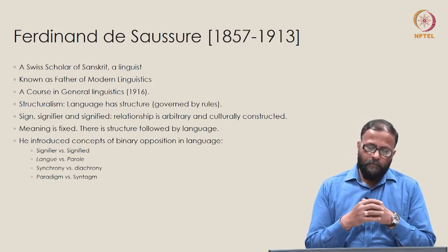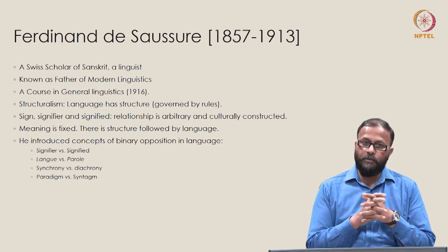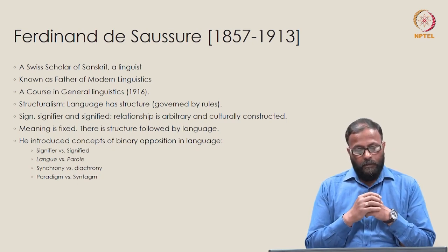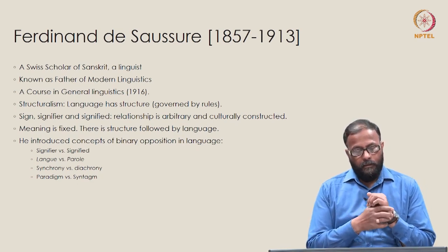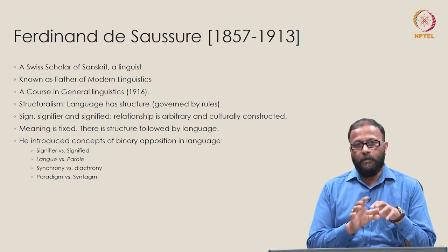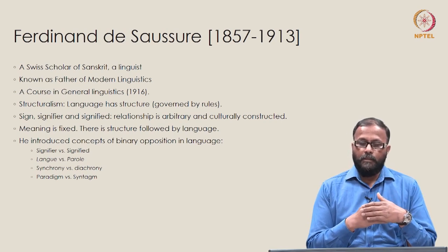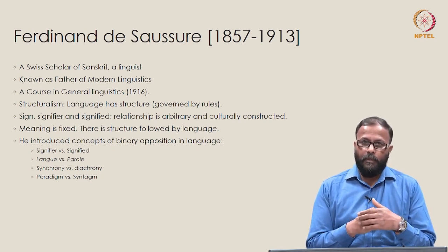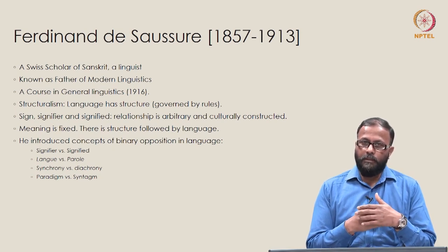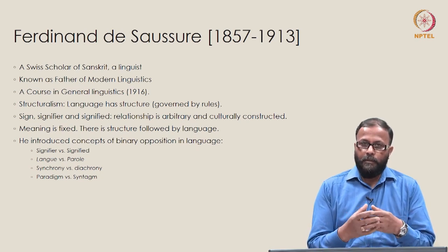Saussure said meaning is fixed and there is a structure followed by language. He introduced concepts of binary oppositions in language: signifier and signified, langue and parole, synchrony and diachrony, paradigm and syntagm. We will talk about all this in future videos. Ferdinand de Saussure is the reference point for discussion on modern linguistics and understanding language as a structural phenomenon — how language has a structure, is rule-governed, and represents objective reality.